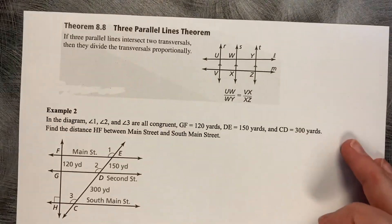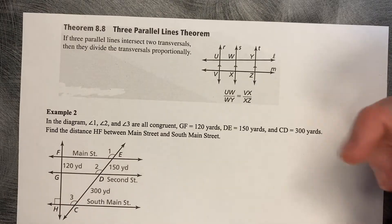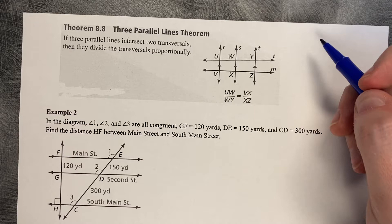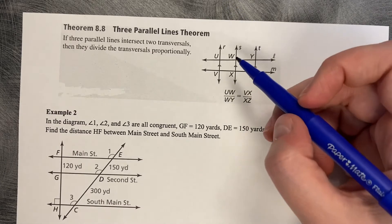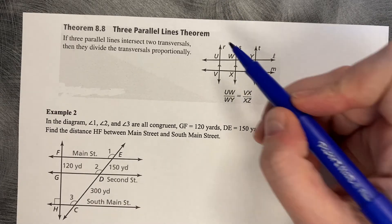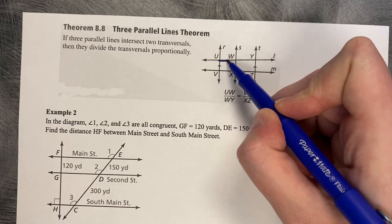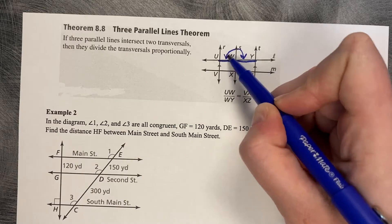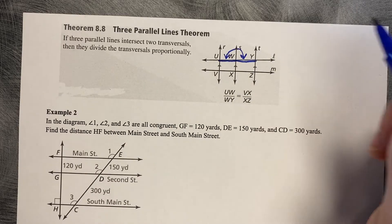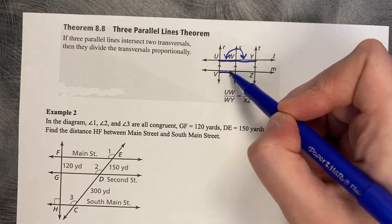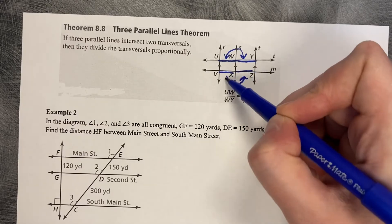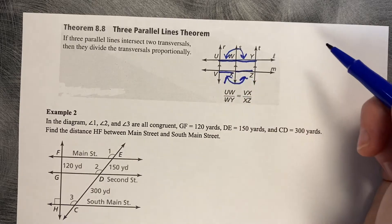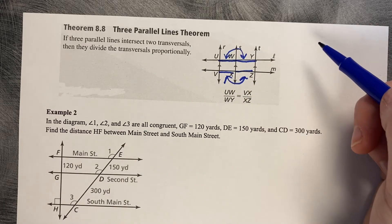Another proportionality theorem is called Theorem 8.8, the Three Parallel Lines Theorem. If you've got three parallel lines in a diagram, it creates proportionate lengths on the inside of the boxes. So UW is proportionate to YW, and VX is proportionate to XZ. That inner box that's created instead of a triangle is what is proportionate.